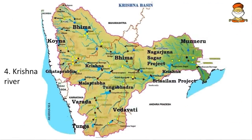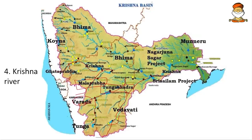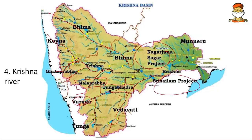The Krishna river also has important tributaries. Starting: Vedavati flows here, then Tungabhadra — Tunga and Bhadra join to form Tungabhadra. Then we have Malaprabha and Ghataprabha — these are like sister rivers flowing from Karnataka. Then Koyna, which has the famous Koyna Dam in Maharashtra. Then Bhima river, one of the biggest tributaries. Important dams here are Nagarjuna Sagar and Sri Sailam project.